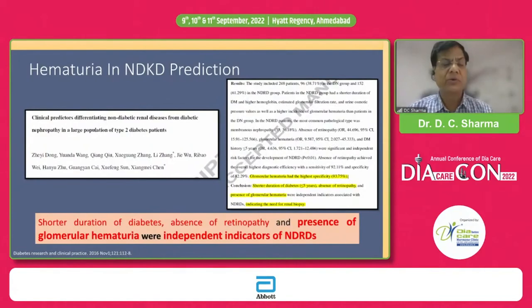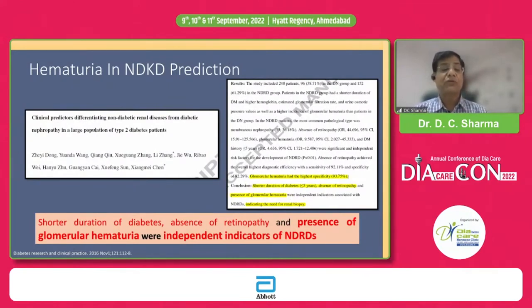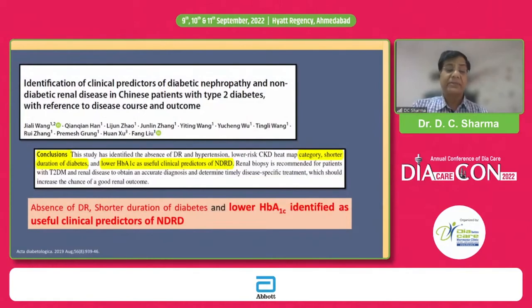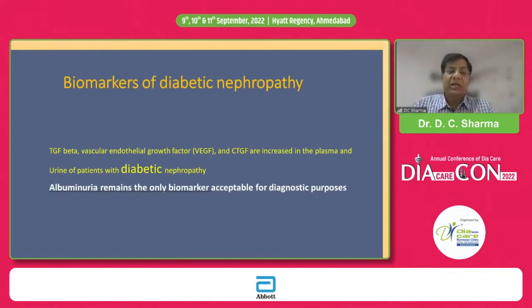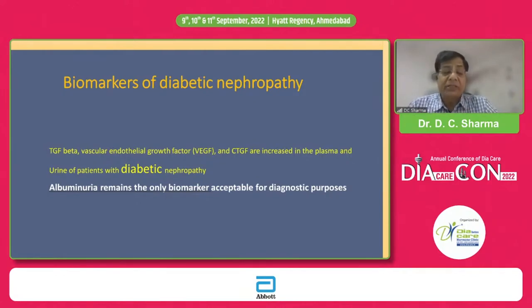A Korean study found that shorter duration of diabetes, absence of retinopathy, and presence of glomerular hematuria were indicators of non-diabetic kidney disease. A Chinese study similarly identified absence of diabetic retinopathy, shorter duration of diabetes, and lower HbA1c as useful clinical predictors of non-diabetic kidney disease. Regarding biochemical markers, there are no specific markers to differentiate the two conditions — albuminuria remains the only biochemical marker acceptable for diagnostic purposes.